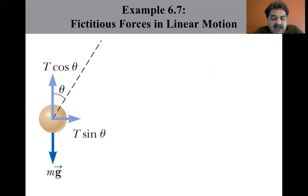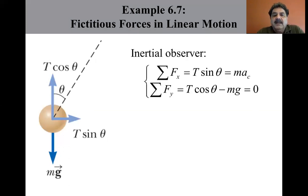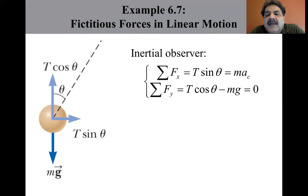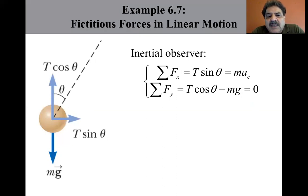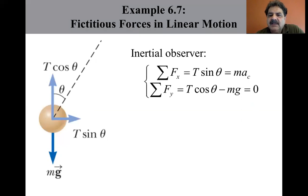The horizontal component would be T sin θ. Applying the particle under a net force and particle in equilibrium models: in the x-direction, T sin θ equals mass times centripetal acceleration. In the y-direction, T cos θ minus mg equals zero.